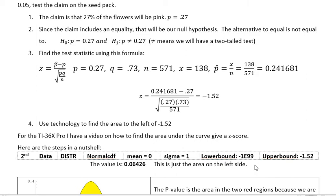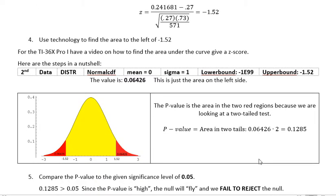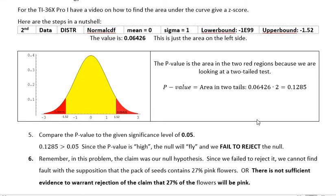But that's just the area on the left side. So if we look at this picture, because I told you we were going to have a two tailed test, we have 0.06426 on the left. We have the same amount on the right. So the p-value is the area in the two red regions because we're looking at a two tailed test. The red regions are on either end here. So the p-value equals 0.06426 times 2, which is 0.1285.